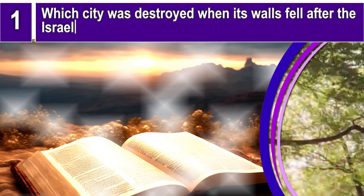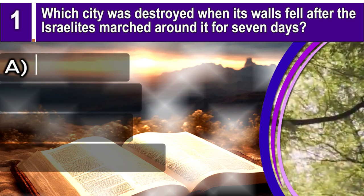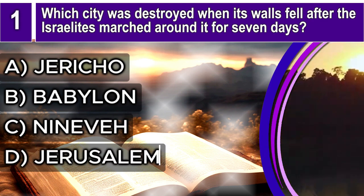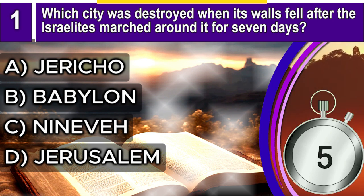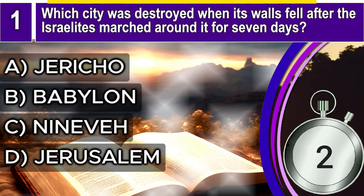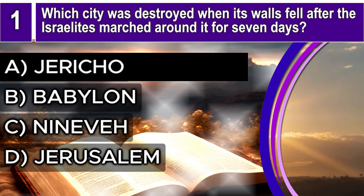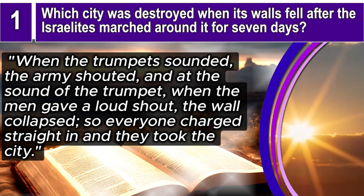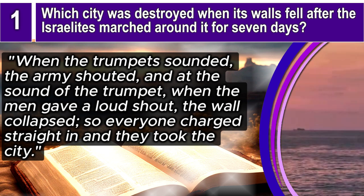Question 1. Which city was destroyed when its walls fell after the Israelites marched around it for seven days? A. Jericho, B. Babylon, C. Nineveh, D. Jerusalem. The correct answer is A. Jericho. Joshua 6, verse 20 says: When the trumpets sounded, the army shouted, and at the sound of the trumpet, when the men gave a loud shout, the wall collapsed, so everyone charged straight in, and they took the city.